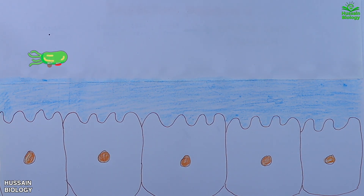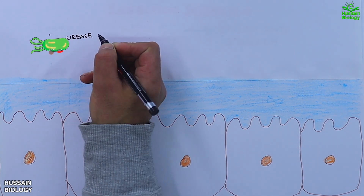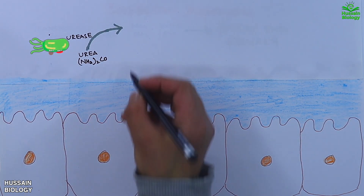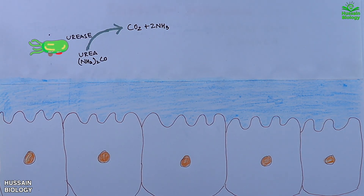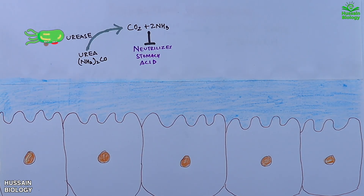The pH of the stomach antrum is normally acidic, typically ranging between 1.5 and 3.5, creating an acidic environment. In the animation we see Helicobacter pylori has reached the stomach. First, it secretes urease enzyme, which acts on urea and converts it into carbon dioxide and ammonia. This ammonia, being alkaline in nature, neutralizes the stomach acid, thus creating a suitable environment for H. pylori.